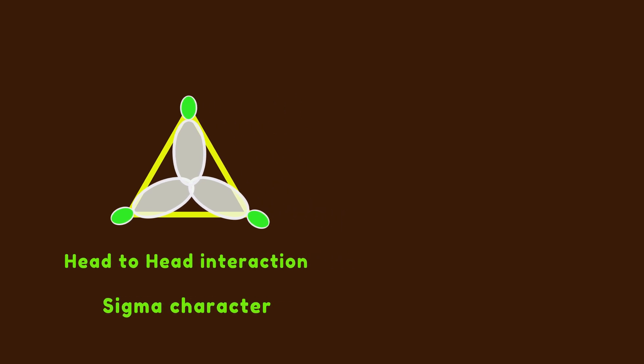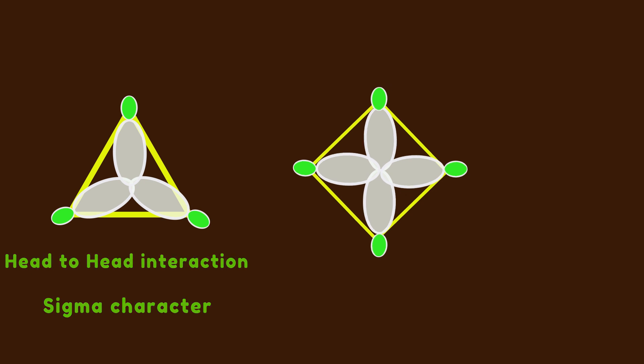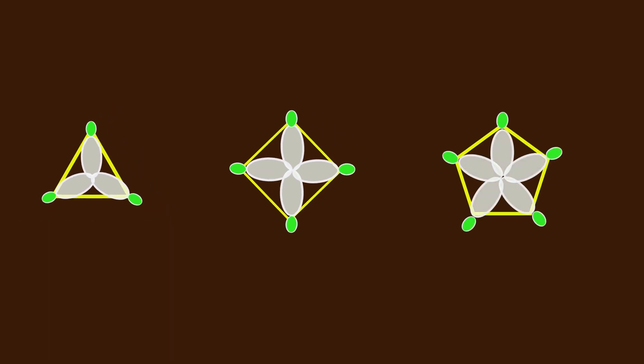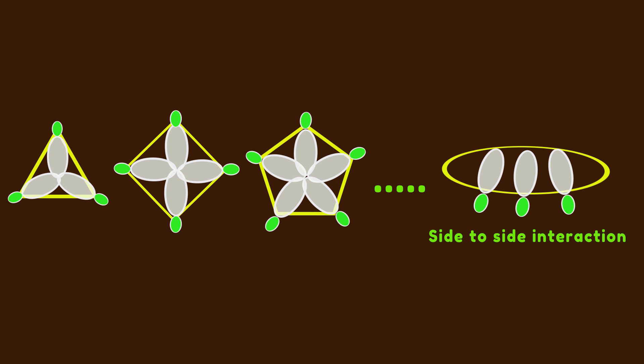In a four-membered ring, because of larger bond angle, the overlap of radial orbitals decreases. Similarly, in a five-membered ring, this overlap is less than a four-membered ring. If we continue to increase the size of the ring, radial orbitals change their character. In large rings, because of side-to-side interaction instead of head-to-head interaction, radial orbitals have pi character.